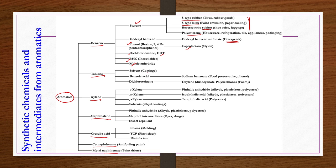Toluene is primarily used as a solvent but also used to produce benzoic acid. From benzoic acid you can produce sodium benzoate, which is a very good food preservative, and it is also used for the production of phenol. Dichlorotoluene can also be produced from toluene, and toluene is used for the production of foam materials.